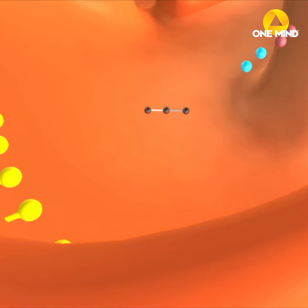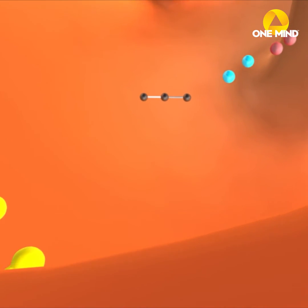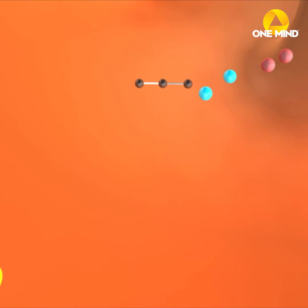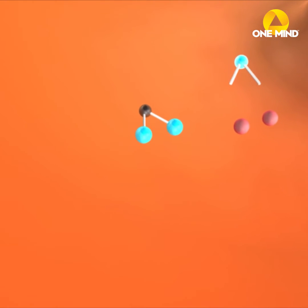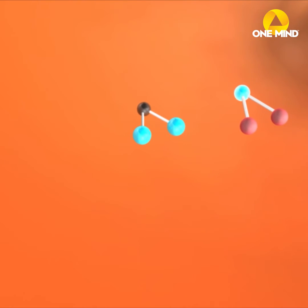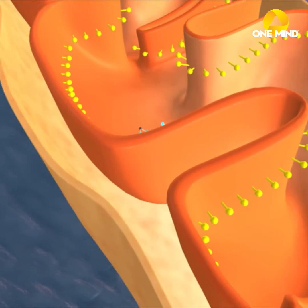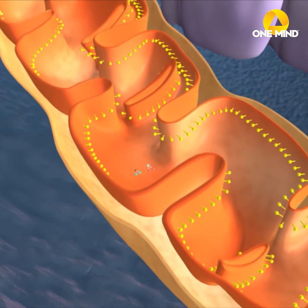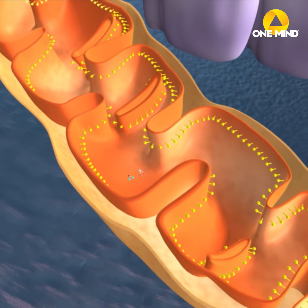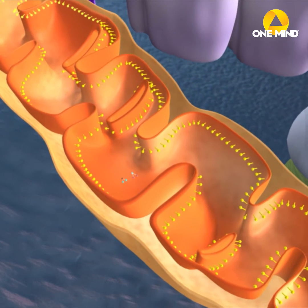When you do a deep dive into the science of all those roles, you start to learn that mitochondria are actually the primary regulators of neurotransmitters and neurotransmitter release.